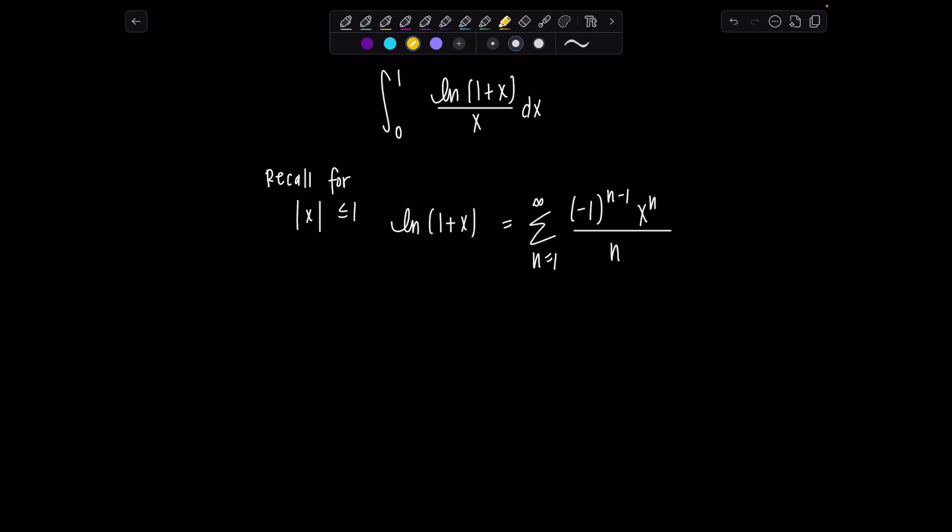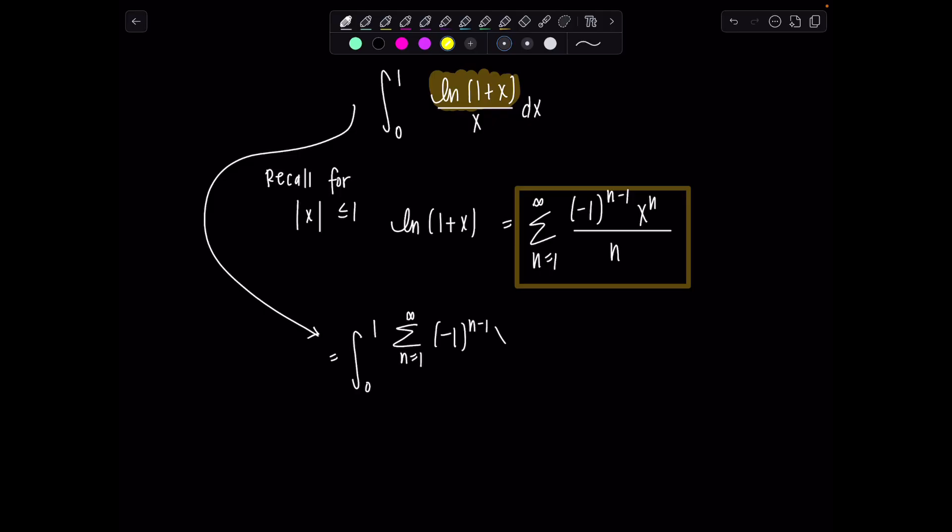So what I'm going to do is replace natural log of 1 plus x in my integral with its power series representation. And that's valid. Notice we're on the interval from 0 to 1, so this power series representation holds. So we have integral 0 to 1, the sum n equals 1 to infinity, negative 1 to the n minus 1, x to the n over n, and then this is all over x, dx.